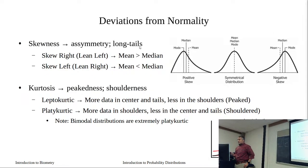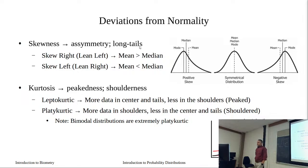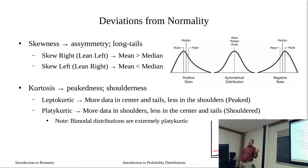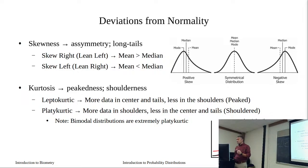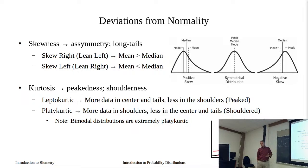We've been talking about normality, but not everything is normally distributed. If we violate normality, it's usually due to skewness or kurtosis. We'll ignore bimodal or multimodal cases and assume one peak - one mode. We can be skewed or we can be kurtotic.